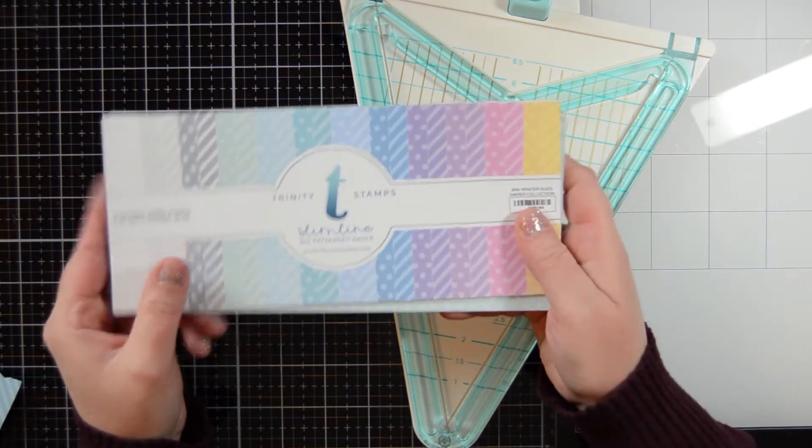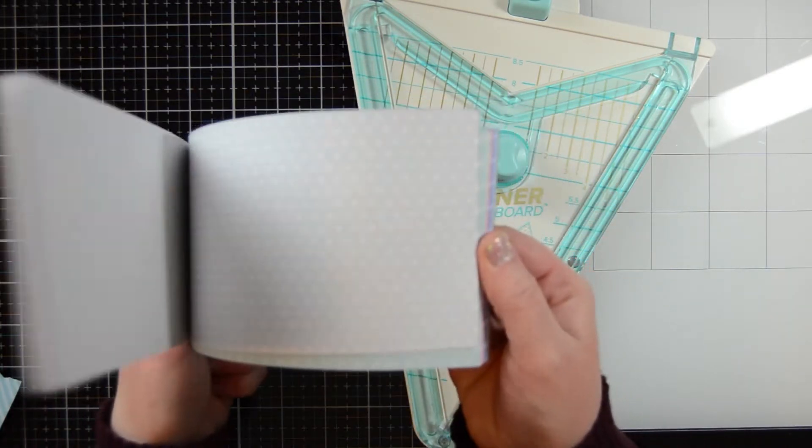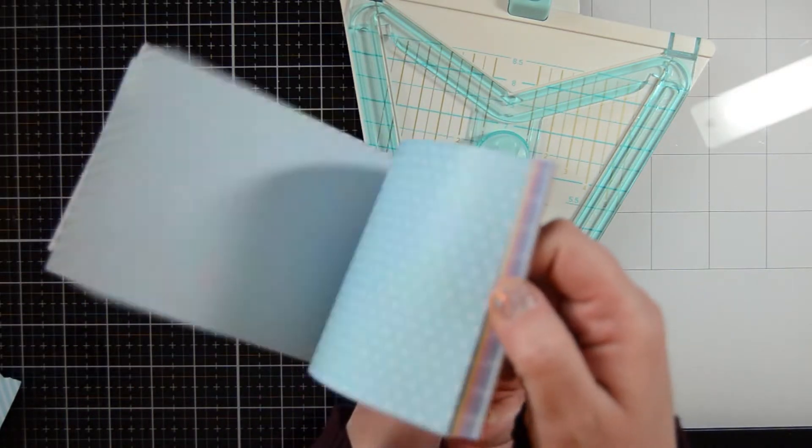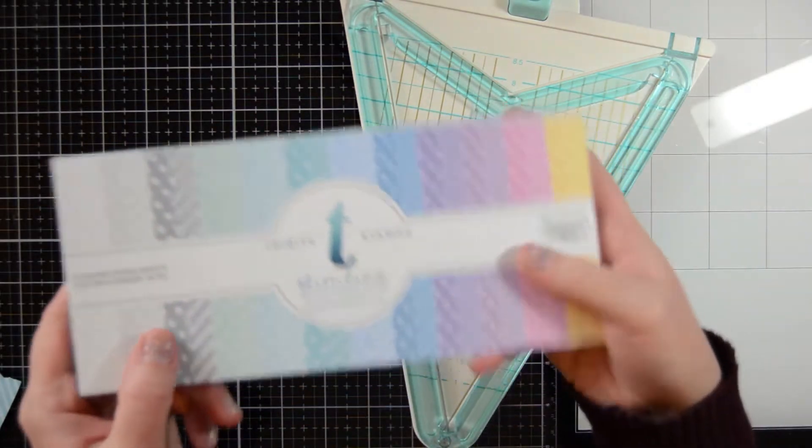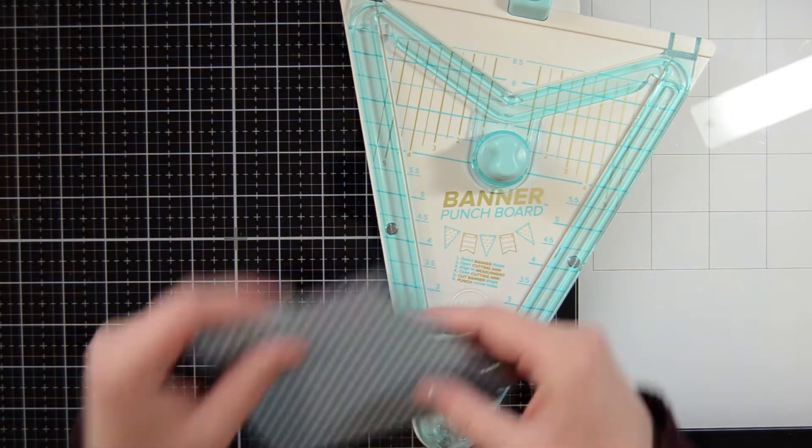So to start out, I am going to be using some of our Trinity Stamps slimline papers. I'm going to be doing this in a kind of bluish turquoise color scheme. So I'm going to be using some papers from this one and the other one I will show you in a moment.